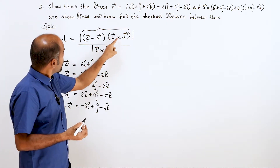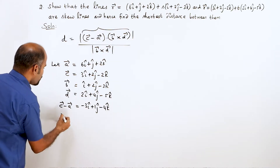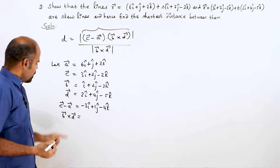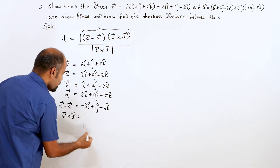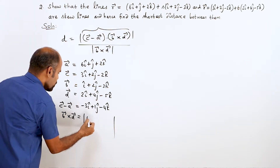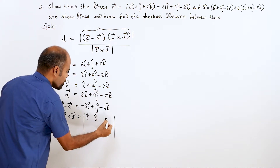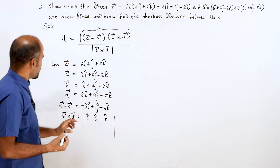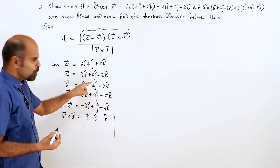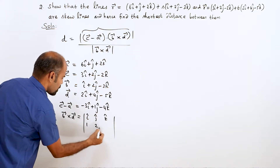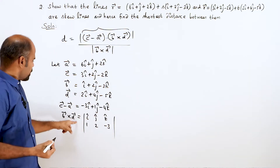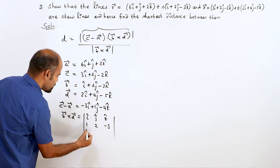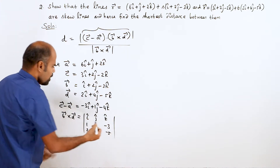Now find b vector cross d vector. Using the determinant method: first row i cap, j cap, k cap; second row — b vector coefficients: 1, 2, minus 3; third row — d vector coefficients: 2, 4, minus 5.